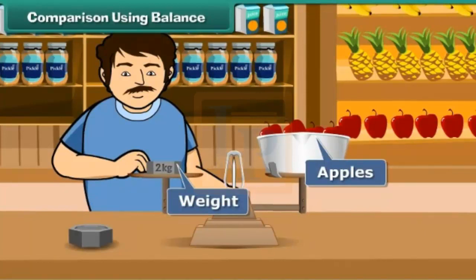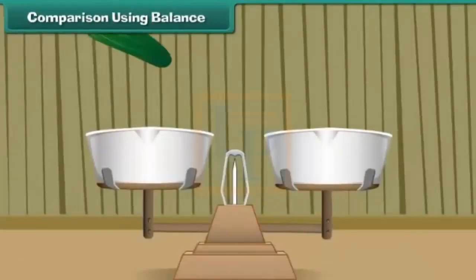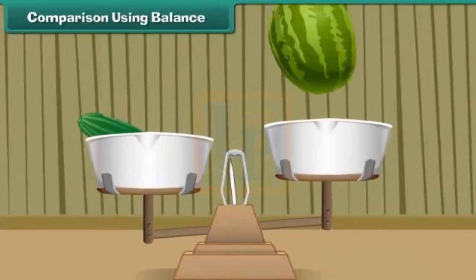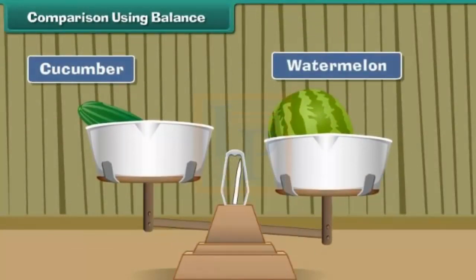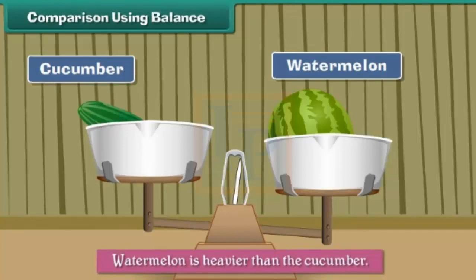The balance can also be used to compare weights. Let us see how. Place a cucumber on one side and a watermelon on the other side of the balance. The side that has the watermelon goes down. It means that the watermelon is heavier than the cucumber.